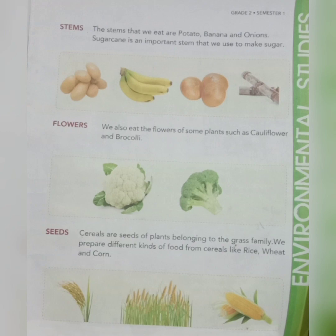Plants have different parts and almost all parts of a plant are edible. Roots that we eat: beetroot, carrot and radish. Leaves that we eat: spinach, lettuce and cabbage. Stems that we eat: potato, banana, onion and sugarcane. Flowers that we eat: broccoli and cauliflower. Seeds that we eat: rice, wheat and corn — these are cereals.